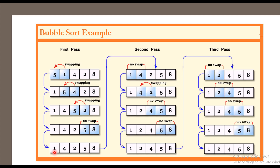This array will be the input for the second pass. For the second pass, the input is 1, 4, 2, 5, 8. As per the technique, we compare the first two elements, 1 and 4. Is 1 greater than 4? False. So there is no swap needed.